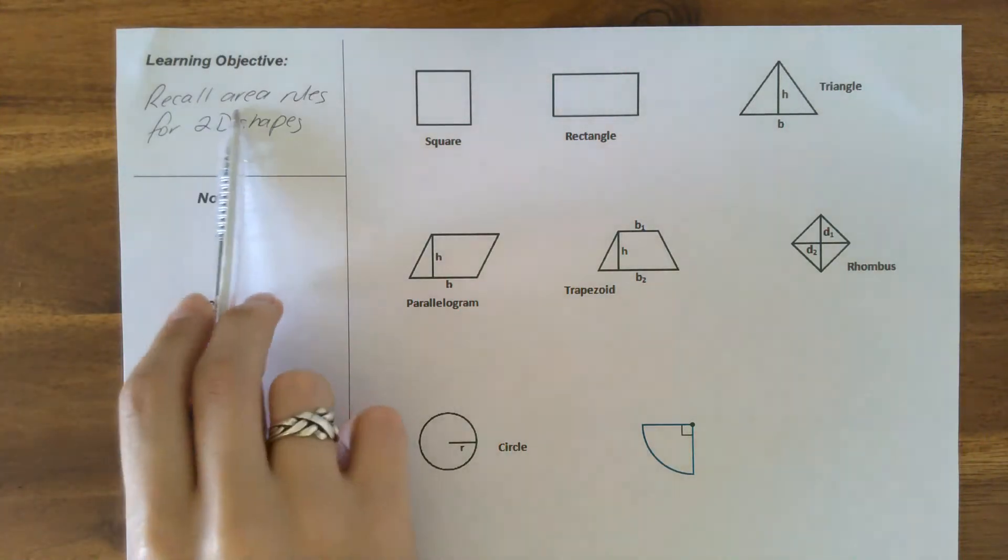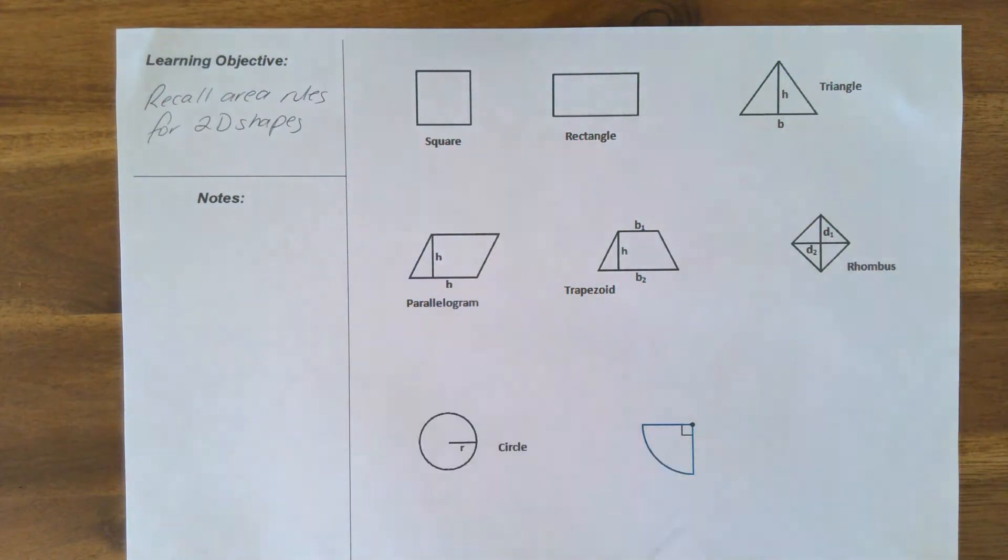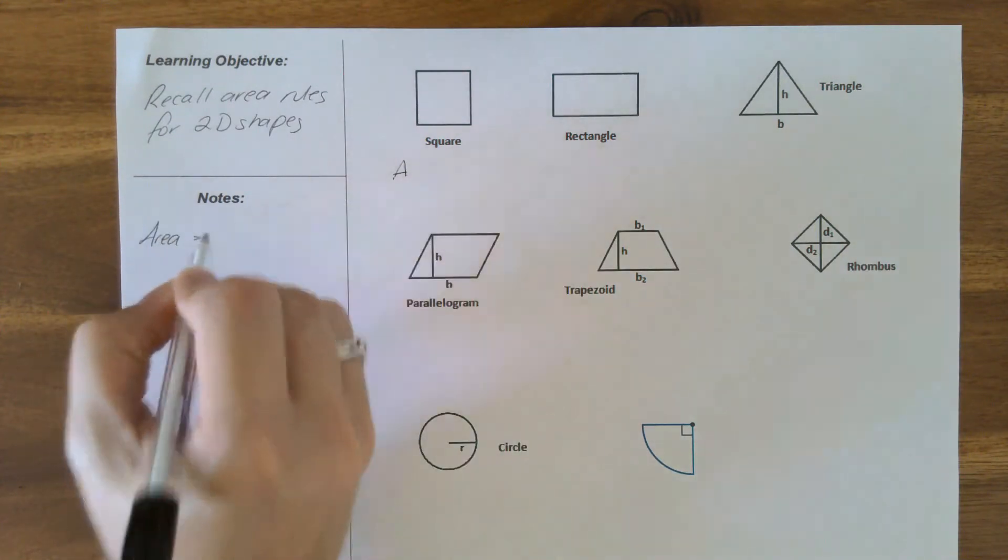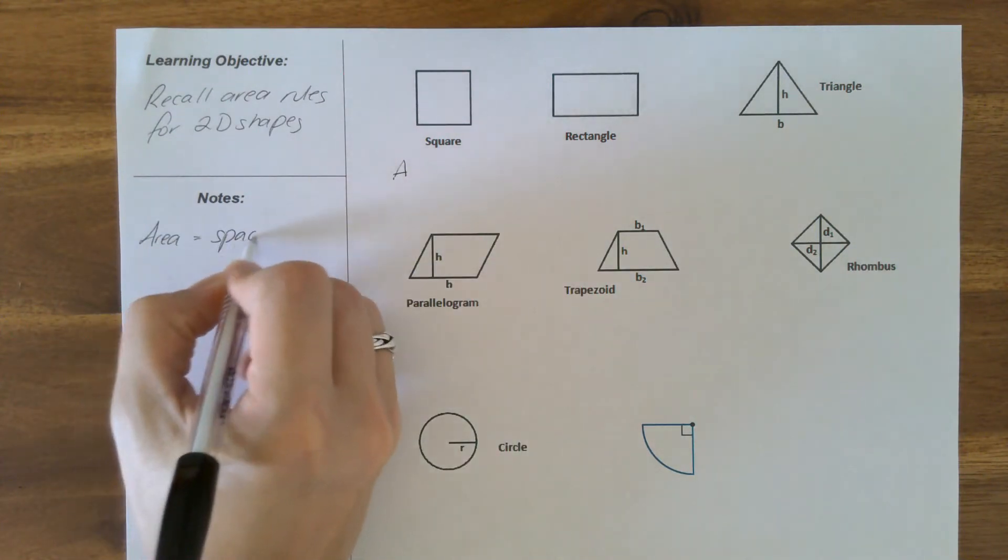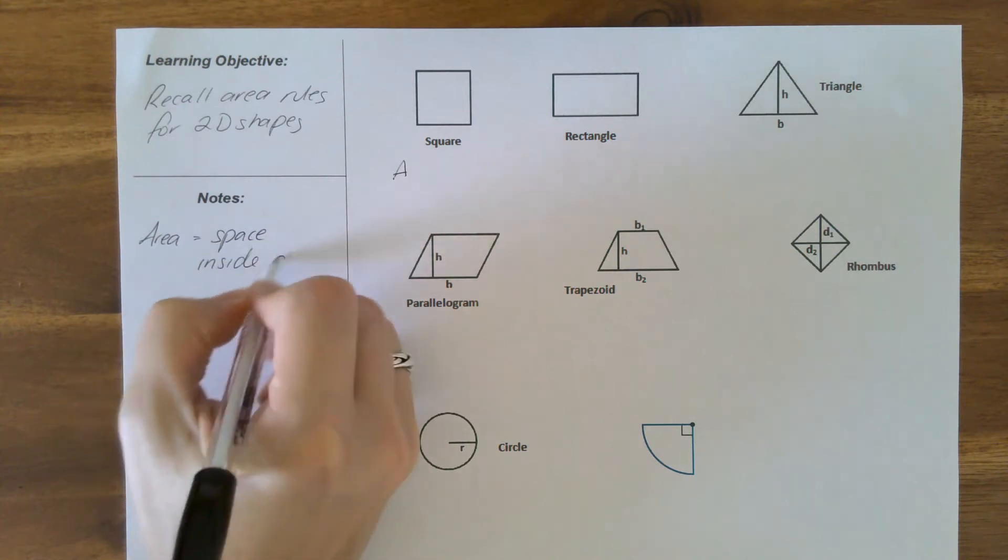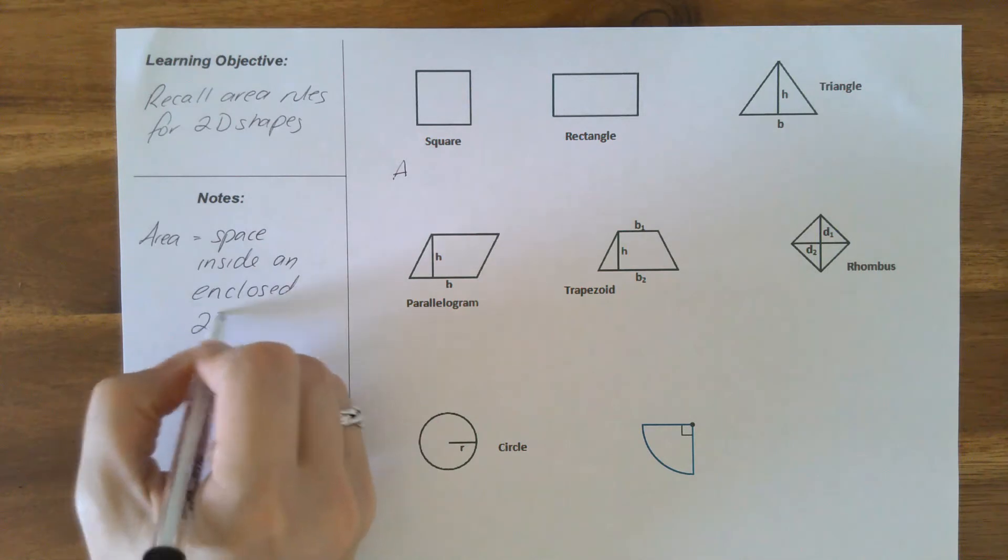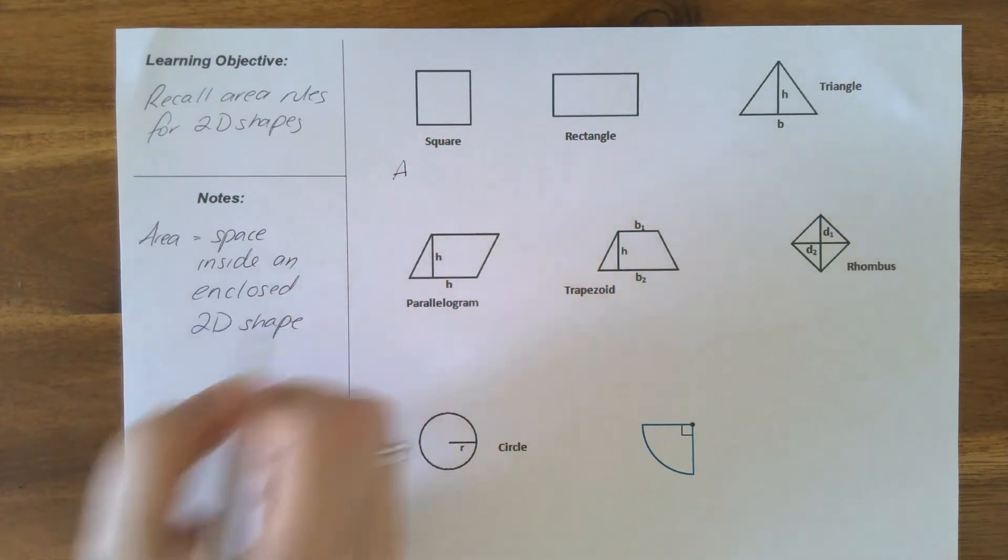We're looking to recall area rules for 2D shapes. Here are a bunch of our 2D shapes we have dealt with before, so we're going to go through these quite quickly. The area, remember, let's talk about what area actually is - it is the space inside an enclosed 2D shape. That's what we're working with here.